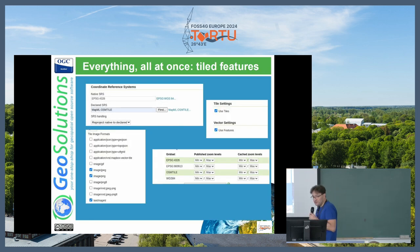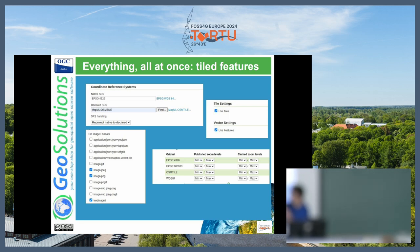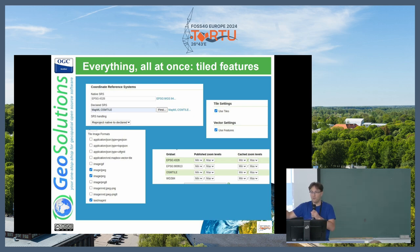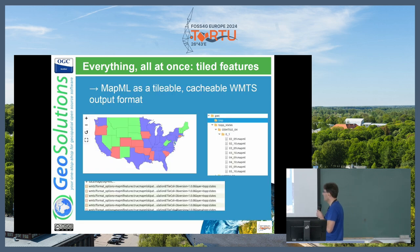If I want to push it and do everything all at once, I can use tiles, I can use features, I can set up a coordinate reference system that matches a tile grid set, and I can configure text MapML as a cacheable format. Then I will basically do vector tiles in a MapML flavor, which the client will pull and render client-side. MapML becomes a tileable cacheable WMTS output format that the client will use.